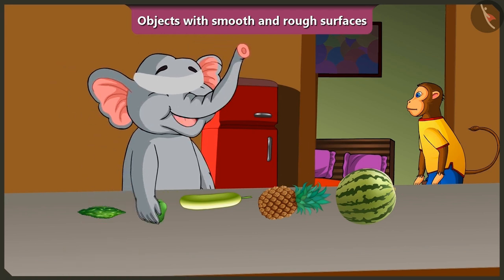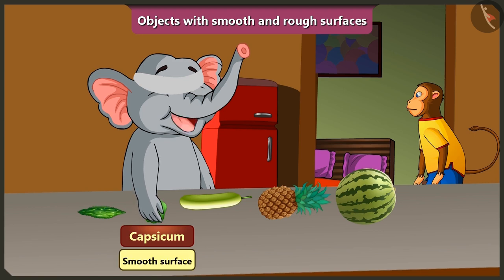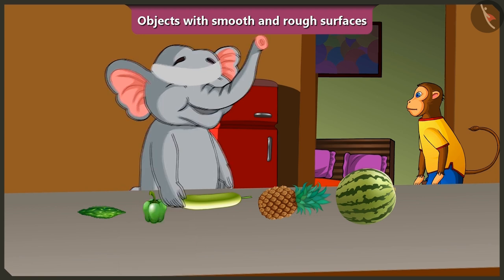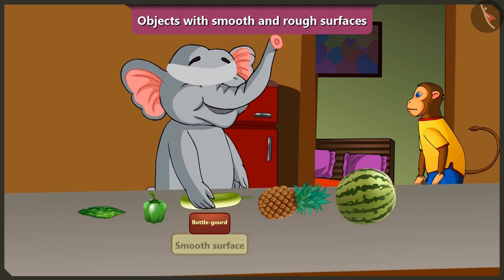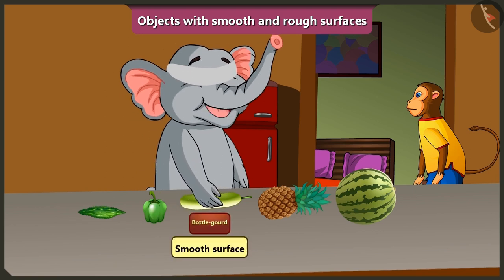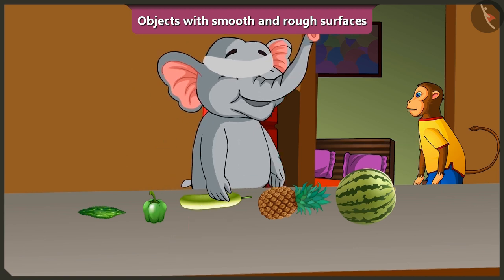This is capsicum — it has a smooth surface. And this is a bottle gourd — this too has a smooth surface. Absolutely right, Appu. Come on, now try and feel these fruits.